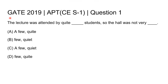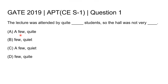This question is from GATE 2019 Civil Engineering Set 1, question number one. The question is of type fill in the blanks. The sentence is: 'The lecture was attended by quite blank students, so the hall was not very blank.' There are four options with combinations of the words 'few' or 'few' and 'quite' or 'quiet'.